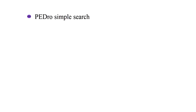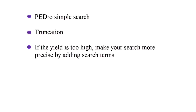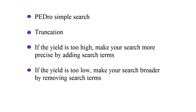We have just demonstrated how to do a PEDro simple search. In the search we used an asterisk to indicate truncation, which is a sophisticated search feature for text fields. More information about searching is available on the PEDro search help page. Our search produced a large number of search results. To overcome this, we made our search more precise by adding extra search terms.